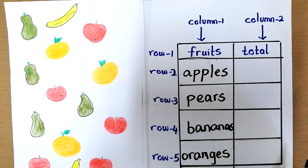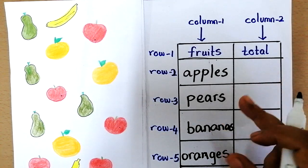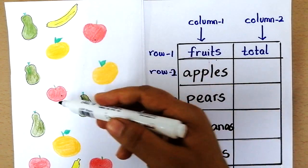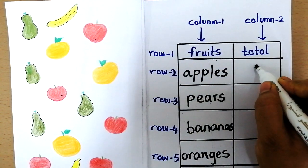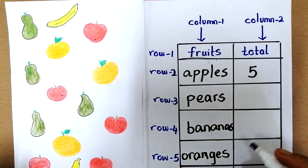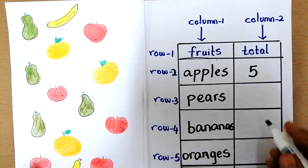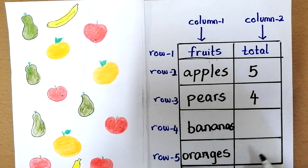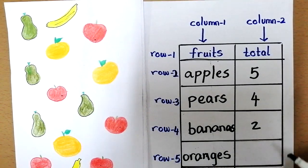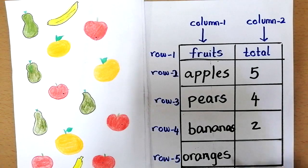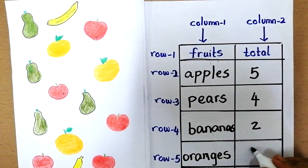Now how many apples do we have? Let's find the total and write the answer here. We have one, two, three, four, five. We have one, two, three, four, four pears.